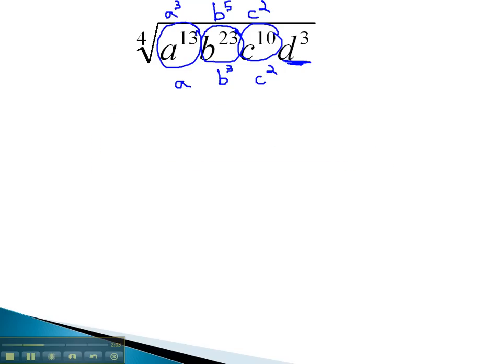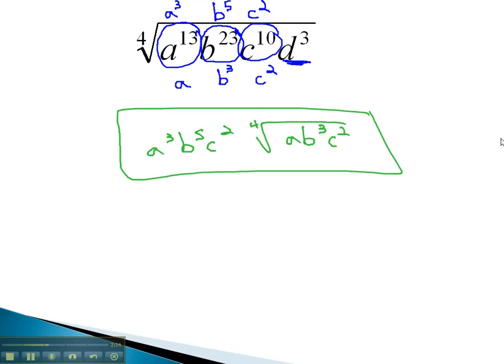This radical has now been completely simplified to a cubed, b to the 5th, c squared, fourth root of a, b cubed, c squared. Let's take a look at another example where we also combine the variables with numbers.